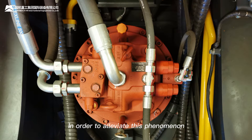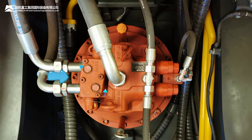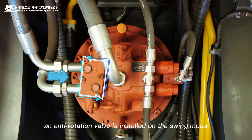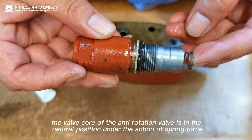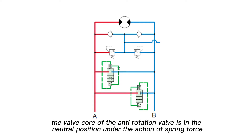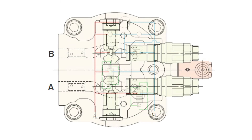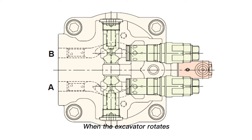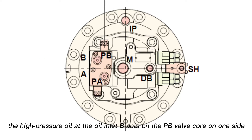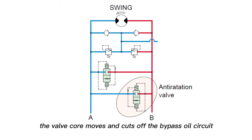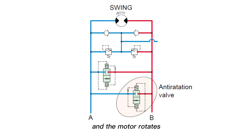In order to alleviate this phenomenon, an anti-rotation valve is installed on the swing motor. When the swing motor is stationary, the valve core of the anti-rotation valve is in the neutral position under the action of the spring force. When the excavator rotates, the high pressure oil at oil inlet B acts on the PB valve core on one side, the valve core moves and cuts off the bypass circuit, and the motor rotates.